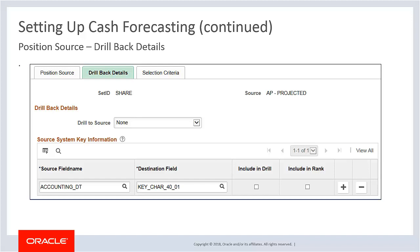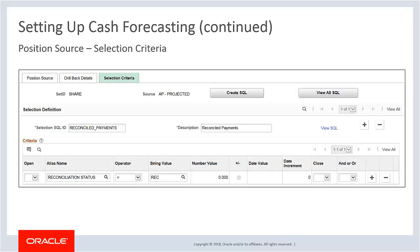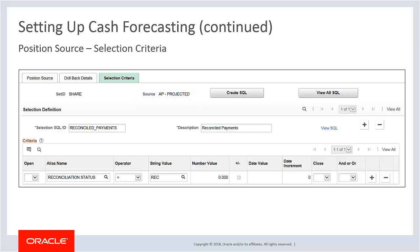Use the drill back details page to set up methods to source applications. The method allows you to view details of a transaction from the cash forecasting results page. Use the selection criteria page to determine selection criteria for a source or regenerate SQL for several sources in batch. In cash forecasting, you define selection criteria by source. You can create a selection definition which may include several criteria and then associate it with the source using the appropriate selection SQL ID and the worksheet level. You can reuse the same selection criteria on any worksheet for the source.